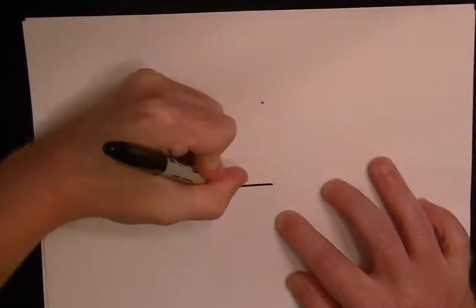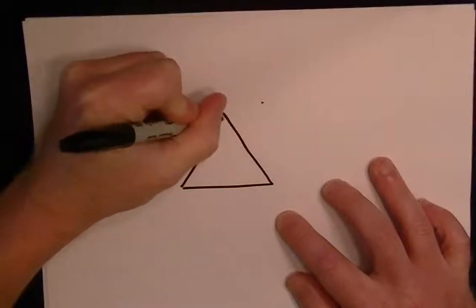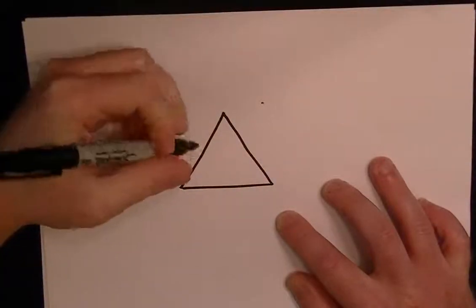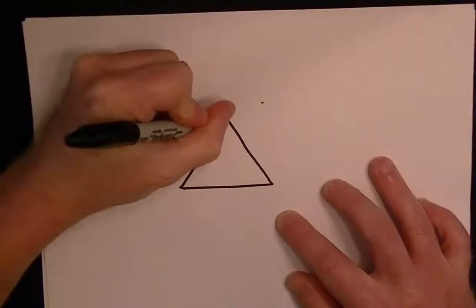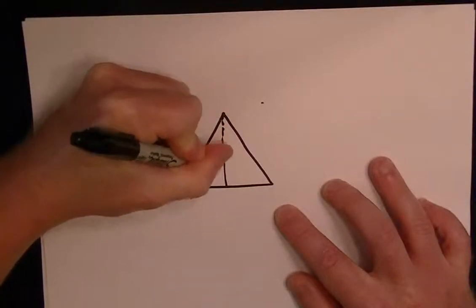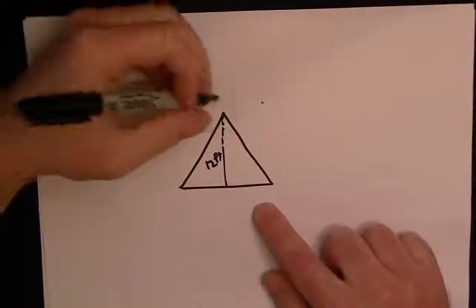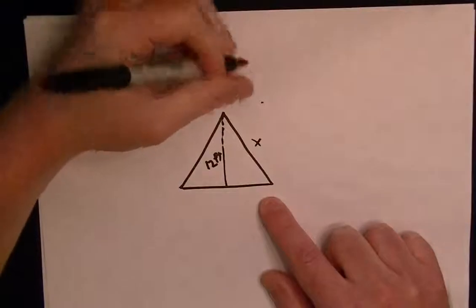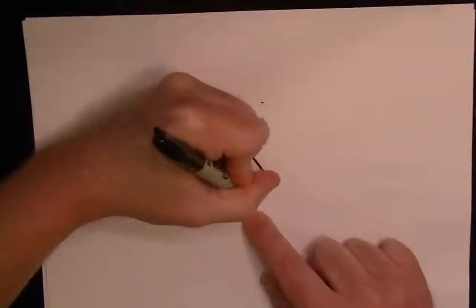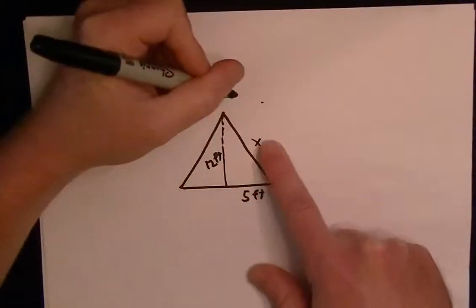Okay, we've got an A-frame storage shed, so I'll just draw an A-frame, basically a triangle. The height of this shed is 12 feet, and we've got a side X here. The distance on the bottom half of the triangle is 5 feet.